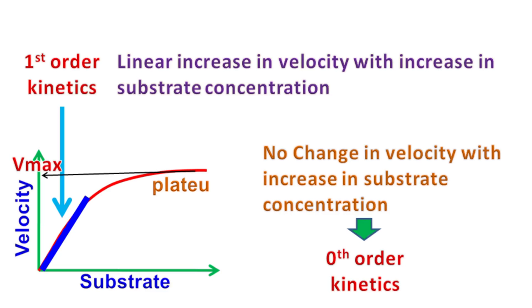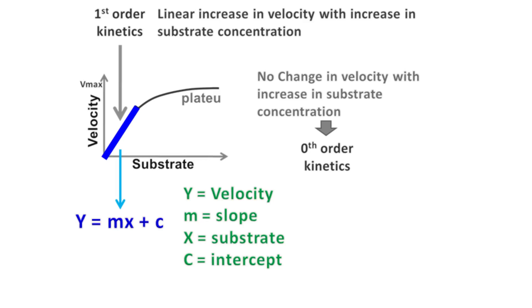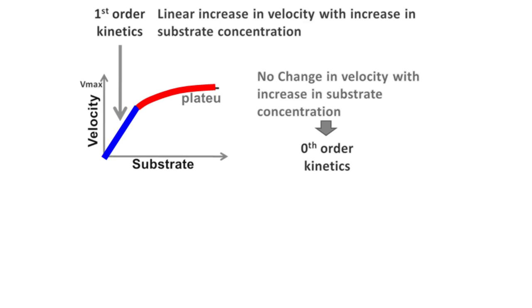The first-order reaction kinetics can be explained easily with the equation y = mx + c, where y is the velocity, m is the slope, c is the intercept on the y-axis, and x is the substrate concentration. However, this equation cannot be used for the plateau region, as velocity is independent of substrate concentration. This is the reason why we need to derive the Michaelis-Menten equation.